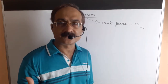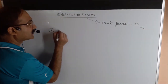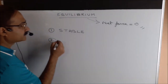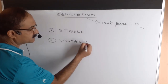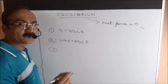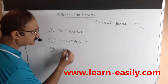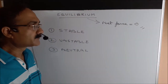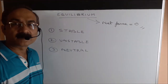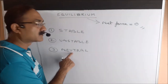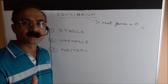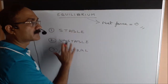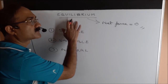Now there are three types of equilibrium. The first type is stable equilibrium, the second type is unstable equilibrium, and the third type is called neutral equilibrium. For the exam, stable and unstable equilibrium are more important — questions are usually not asked on neutral equilibrium, but you should know all three types. You have to be very clear about this concept because many questions are based on it.